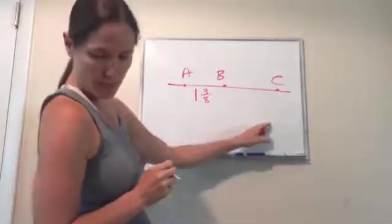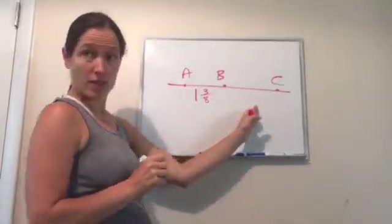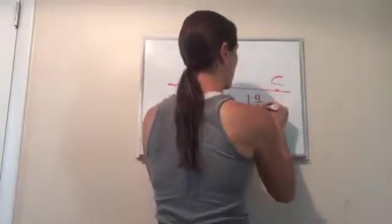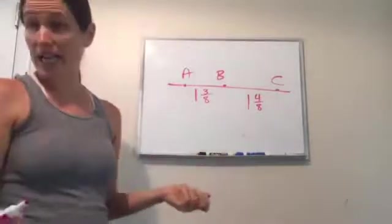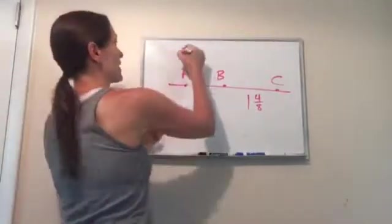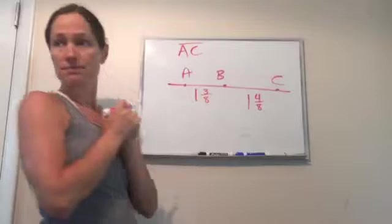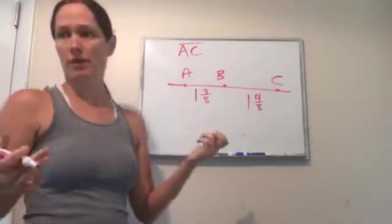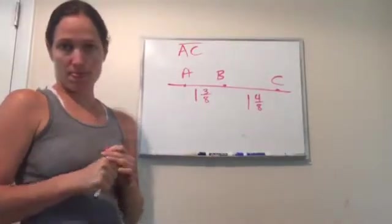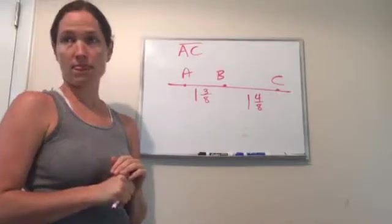And it tells me that BC is one and four-eighths of an inch long. Then it asks me, how long is line AC? That's the question. So what would I do here? You would add together the two numbers, you're exactly right.